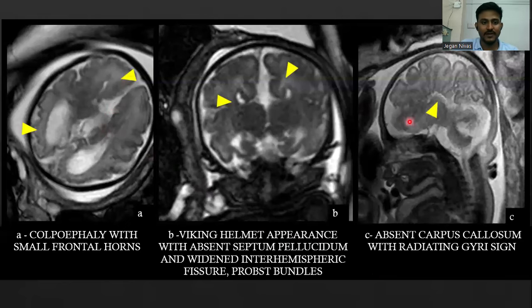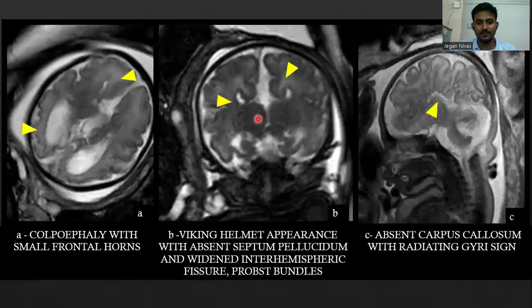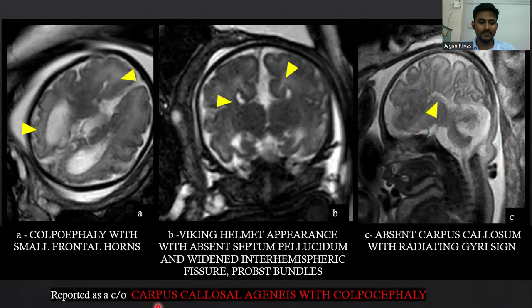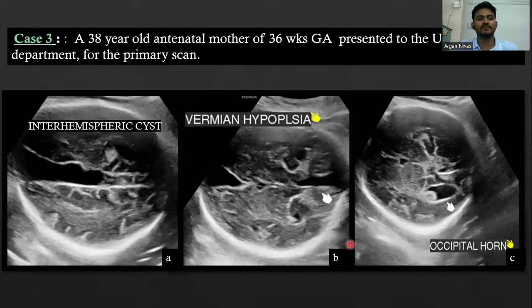We performed MRI, which revealed dilated occipital horns — colpocephaly — with small frontal horns, showing Viking helmet appearance, with absent septum pellucidum and widened interhemispheric fissure and gyral abnormalities. The sagittal images revealed absent corpus callosum and radiating gyri. We reported this as a case of corpus callosal agenesis with colpocephaly.